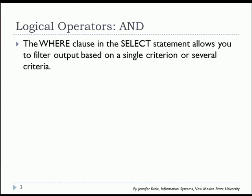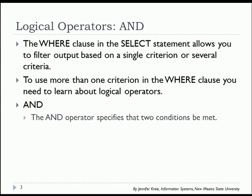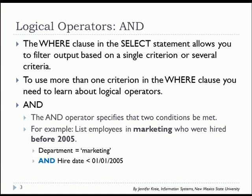The WHERE clause allows you to filter output when you're pulling data from a table or several tables, and you can do a single criterion or you can have several criteria. Now we'll look at situations where you have more than one criterion. The AND operator specifies that two conditions must be met. For example, I want to see a list of employees who are in marketing and who were hired before 2005, so the hire date is prior to January 1st of 2005.